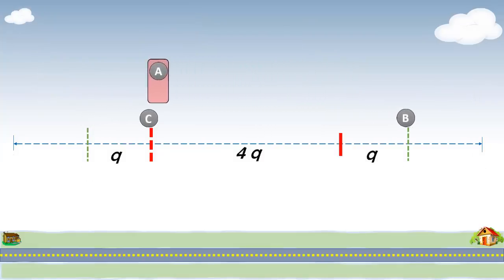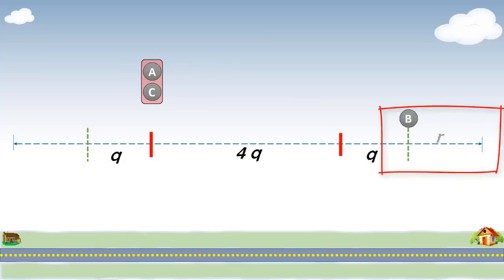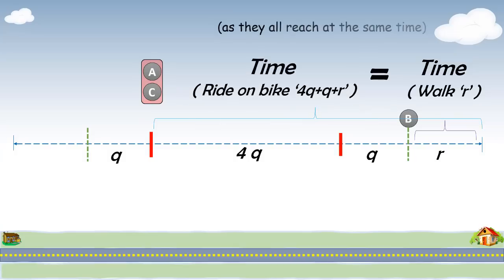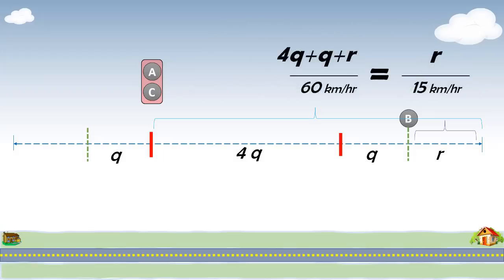Alex picks Karl and heads towards the destination. Let's denote the remaining distance for Bob as R. Remember, all of them are going to reach the destination exactly at the same time. So, that means the time taken for Bob to walk the remaining distance R would exactly be the same as the time taken by Alex and Karl to ride a distance. Time is equal to distance divided by speed. Simple calculation and we get R is equal to 5Q divided by 3. Replace the value of R here.